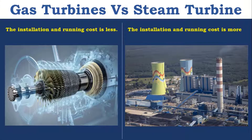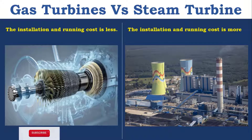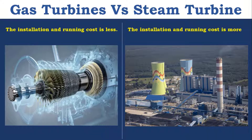The installation and running cost is less in Gas Turbine, whereas the installation and running cost is more in Steam Turbine. When we talk about installation, even land cost is included. We need more land for installation in Steam Turbine, so the cost of installation will be high. Also, when we have many accessories, the running cost will also be more. So, installation and running cost in Steam Turbine is more and in Gas Turbine is less.